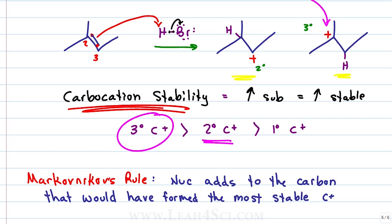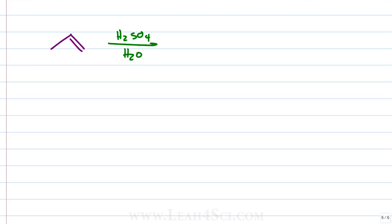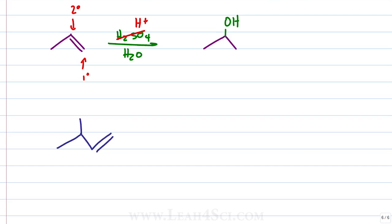Say you're given a simple alkene reaction where H2SO4 reacts with propene. You recognize that H2SO4 is simply a source of H+ in solution and this reaction proceeds by a carbocation intermediate. You identify that the pi bond sits between a primary carbon and a secondary carbon, and you know that Markovnikov's rule says the nucleophile — in this case OH — is going to add to the carbon that would form the most stable carbocation intermediate. So you put the alcohol at the secondary carbon.